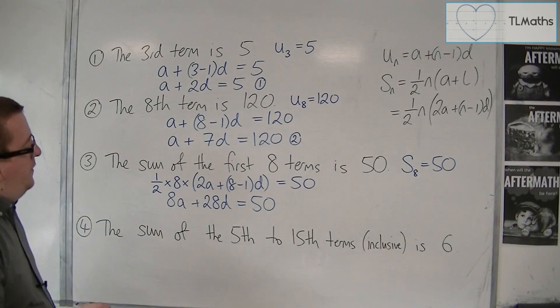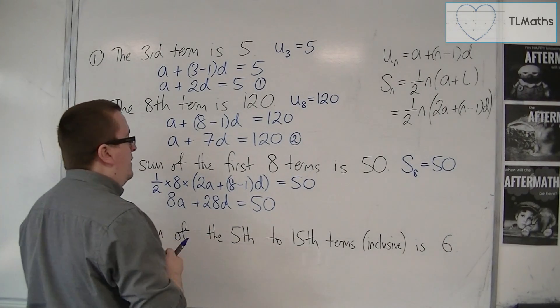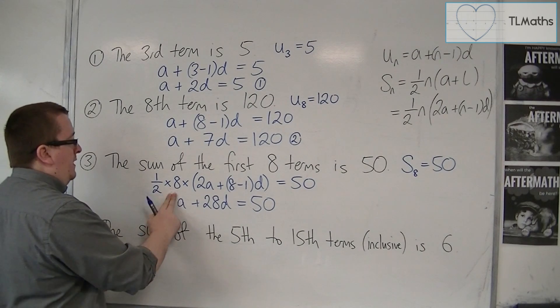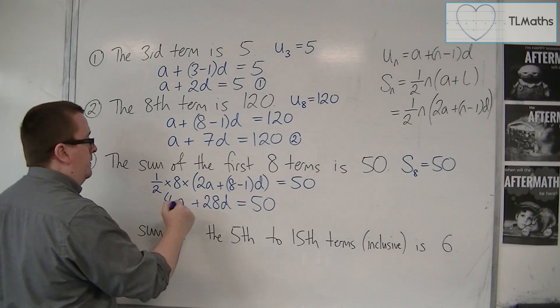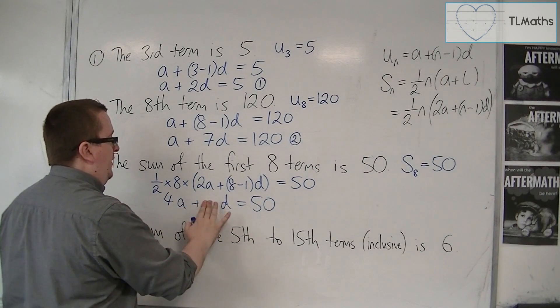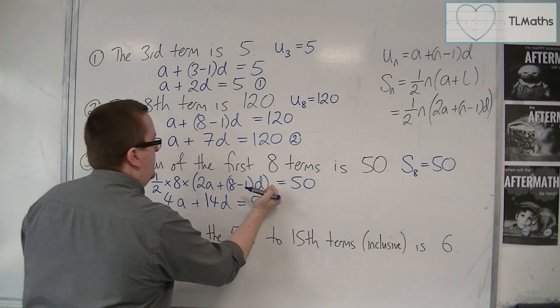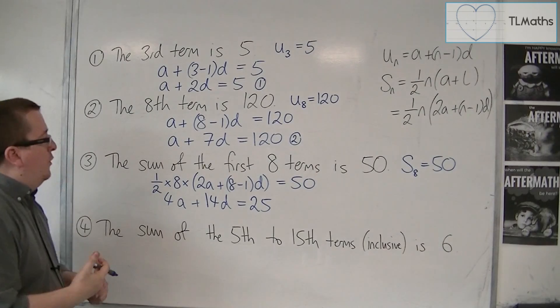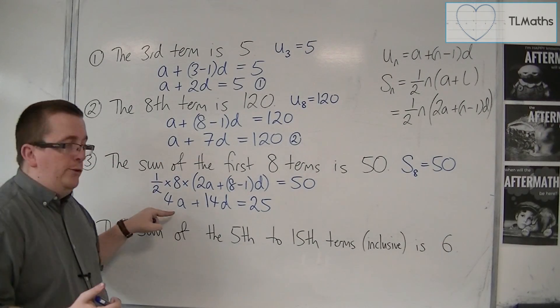And then I could simplify that down, because I can divide everything by 2, and I'm going to get 4a plus 14D is equal to 25. So I've gone from this sentence to that equation.